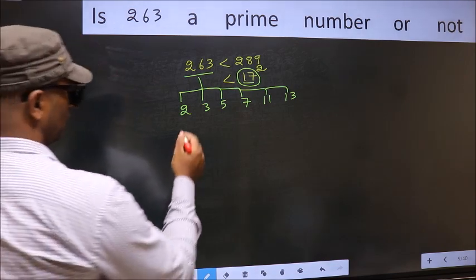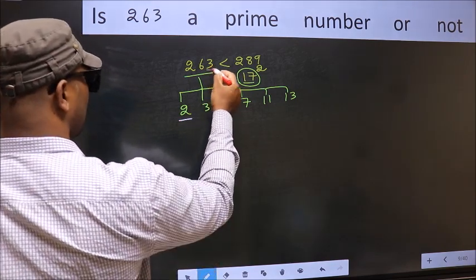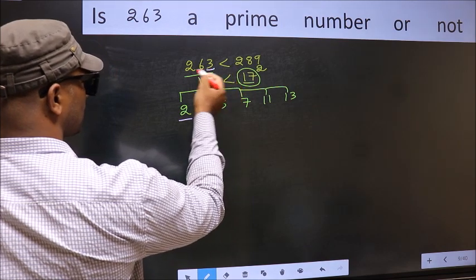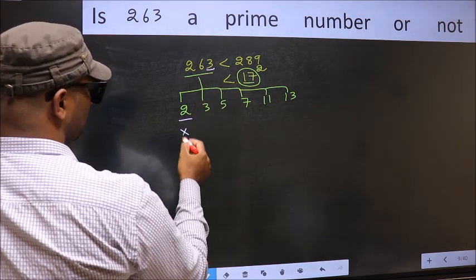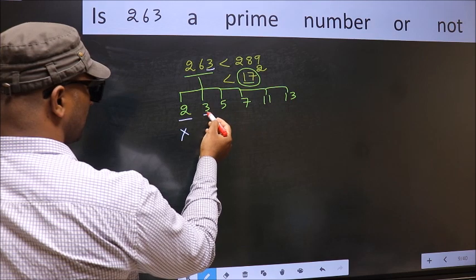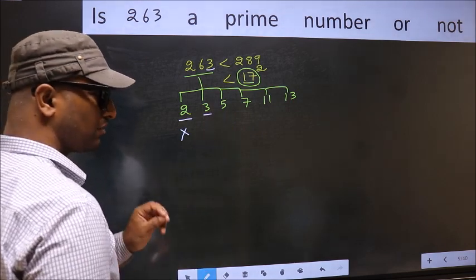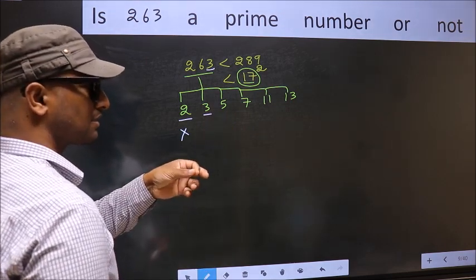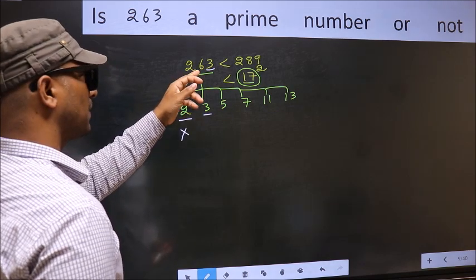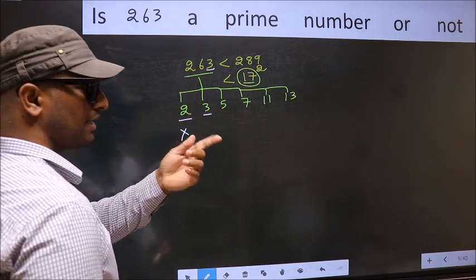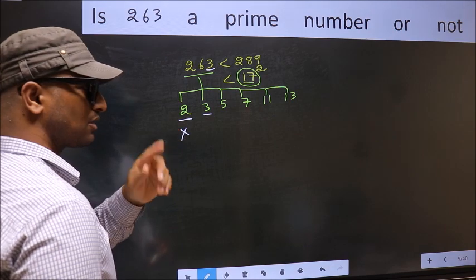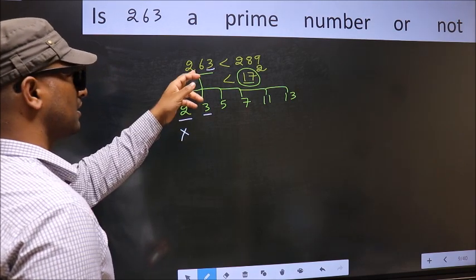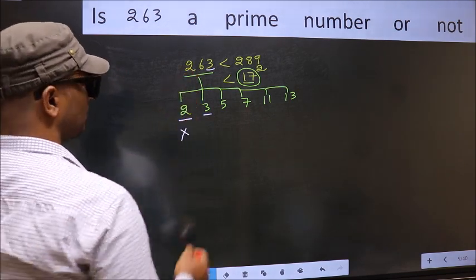Starting with 2. Last digit 3, not even. So, this is not divisible by 2. Next, number 3. To check divisibility by 3, for that add the digits: 2 plus 6 plus 3, we get 11, and 11 is not divisible by 3. So, this number is also not divisible by 3.